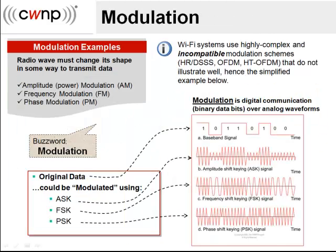In previous chapters we described that a radio wave is encoded with data. The process of changing radio waves in a predetermined pattern is called modulation. As you can see on the bottom right portion of this slide, there are different ways to change radio waves. The first example is amplitude shift keying — by changing the power or amplitude of a radio wave, a wireless station can indicate a change in digital information. The higher power wave represents a 1, and the lower power wave represents a 0.